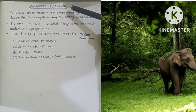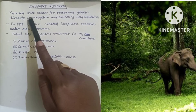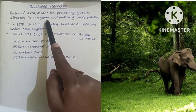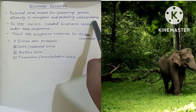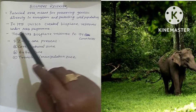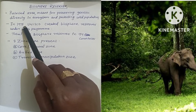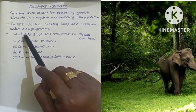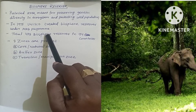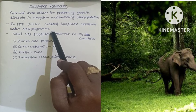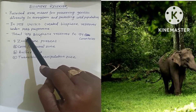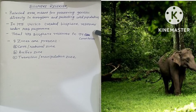Biosphere reserves are protected areas meant for preserving genetic diversity in ecosystems and protecting wildlife populations. In 1975, UNESCO created biosphere reserves under the MAB program — Man and Biosphere program — which was launched in 1971. The total number of biosphere reserves is 408 across 94 countries.